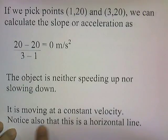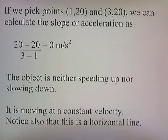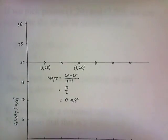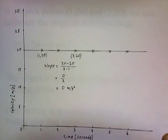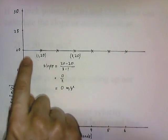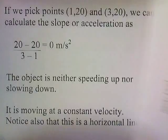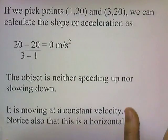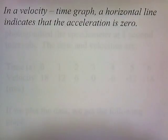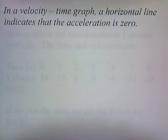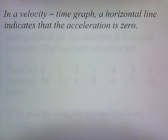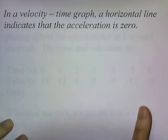It's moving at a constant velocity, and notice that this is a horizontal line. So when the slope of a line is 0, the line is horizontal on the graph. In a velocity-time graph, a horizontal line indicates that the acceleration is 0.